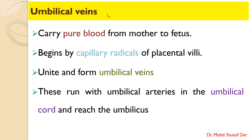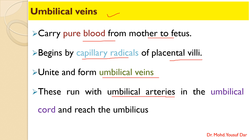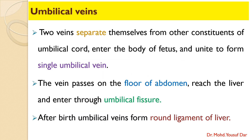Coming to the next term — the umbilical veins: the umbilical veins carry pure blood from the mother to the fetus. The umbilical veins begin as capillary radicals in the placental villi. When they arise from the placenta as capillary radicals, these capillaries unite and form the umbilical veins, which then run within the umbilical cord with the umbilical arteries. Through the umbilical cord they reach the umbilicus, where the two umbilical veins separate from the other constituents of the umbilical cord and enter into the body of the fetus.